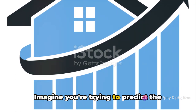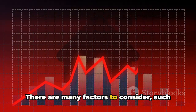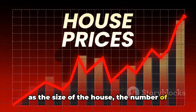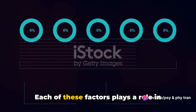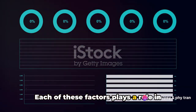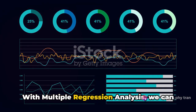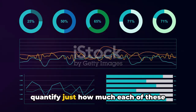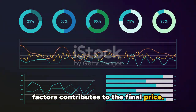Imagine you're trying to predict the price of a house. There are many factors to consider, such as the size of the house, the number of bedrooms, the location, and the age of the property. Each of these factors plays a role in determining the price. With multiple regression analysis, we can quantify just how much each of these factors contributes to the final price.